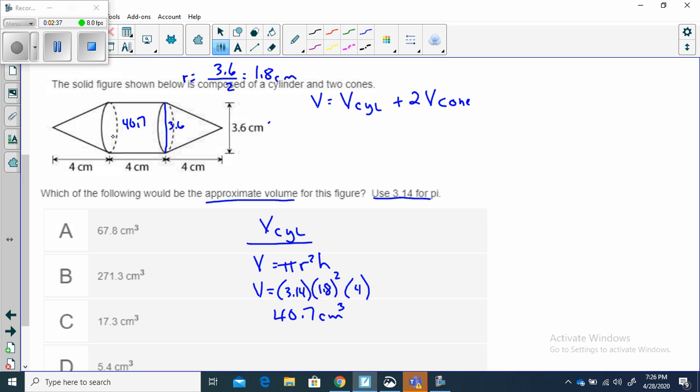Let's find the volume of one of these cones. The volume of a cone, the formula for the volume of a cone, is 1/3 pi r squared h. That would be 1/3, and they told us to use 3.14 for pi.